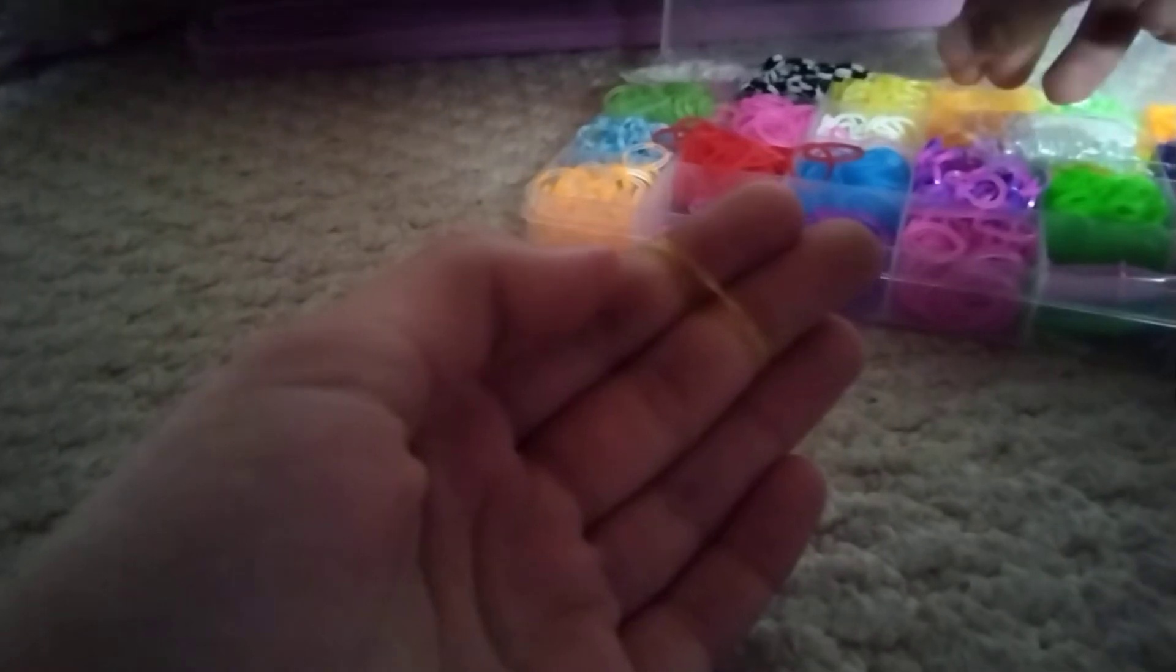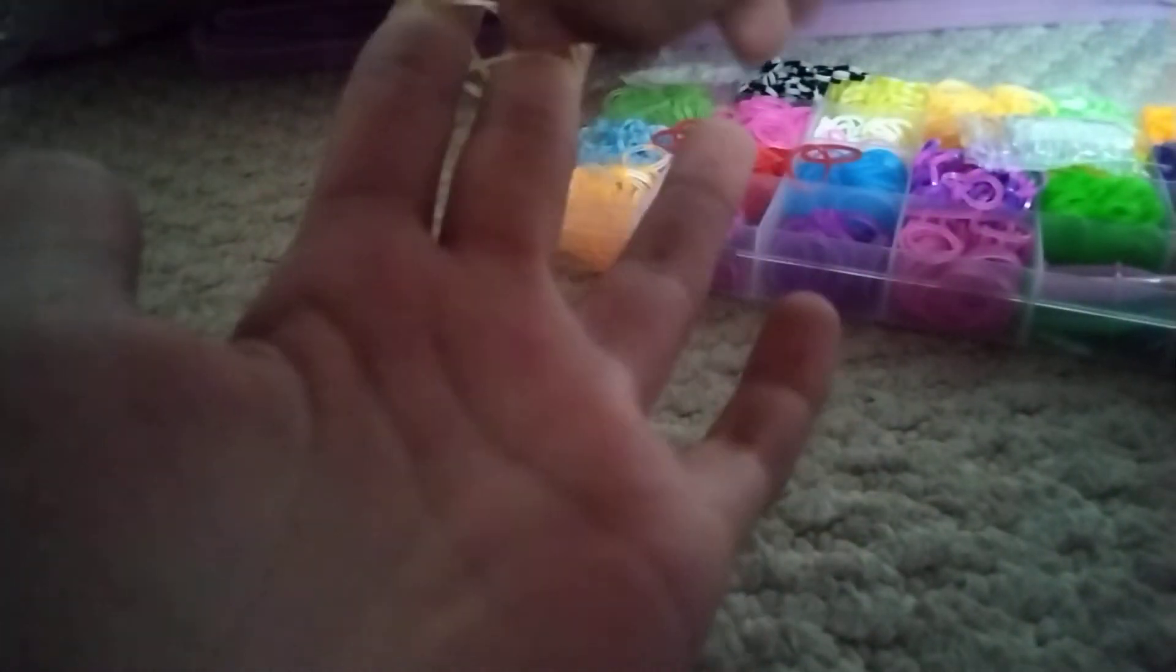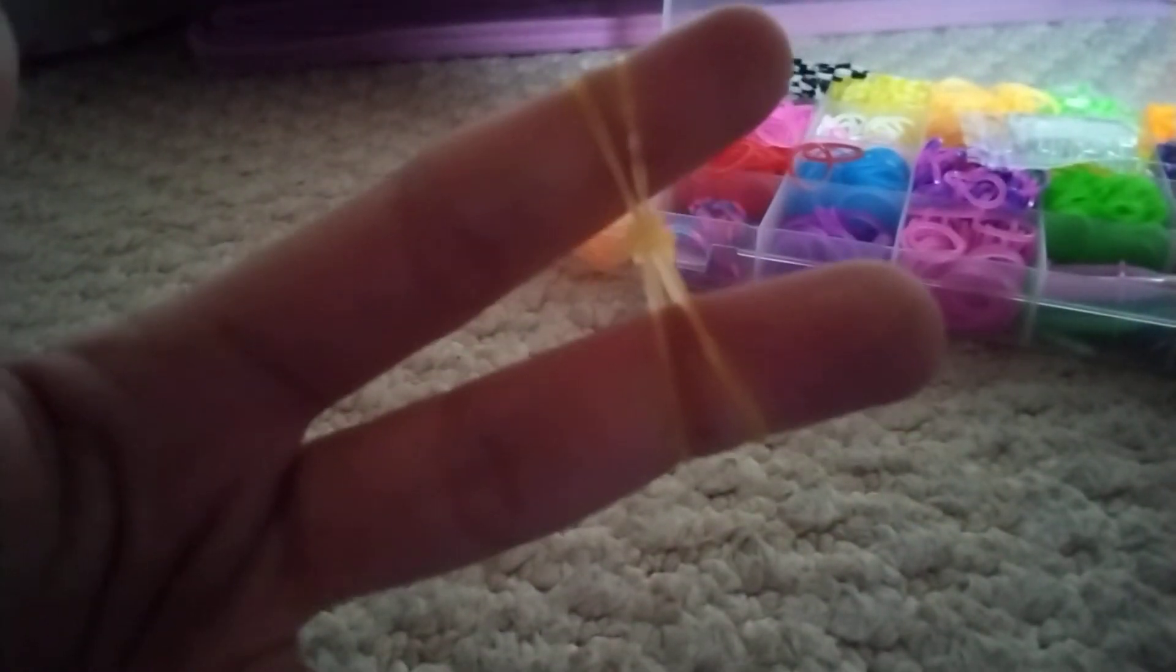And then you get another color, whichever color you'd like. And then you get another color of whichever you'd like as well. And then you get the bottom one and pull it over to the top. And then you continuously do that to make a loom band bracelet.